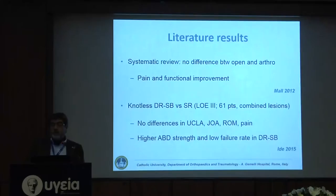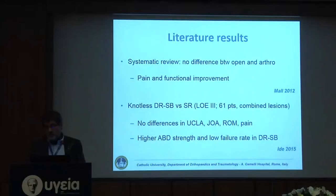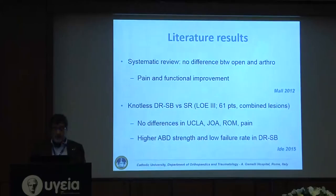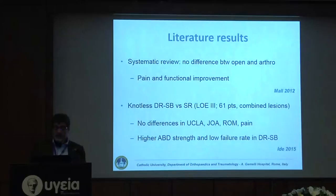Regarding what we know from the literature: according to a recent systematic review, there is no significant difference between arthroscopic and open repair. Subscapularis tear repair is not a strict indication for open surgery — if you can repair it arthroscopically, do it, as there is no significant difference in pain and functional improvement. A 2015 paper showed no difference in range-of-motion, pain, or functional improvement between double-row suture bridge and single-row techniques, but double-row showed higher construct strength and lower failure rates, consistent with findings for the standard posterior-superior cuff.